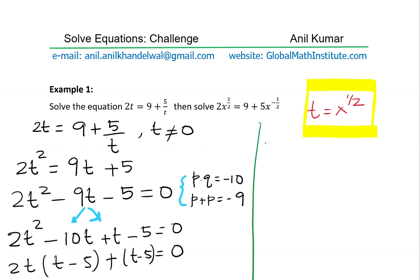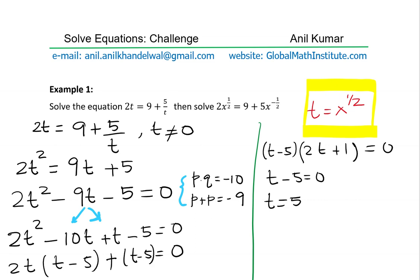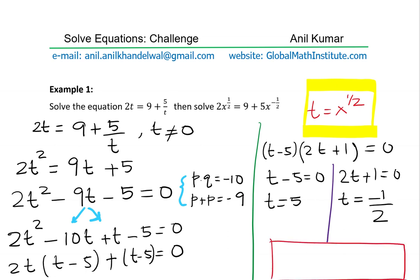Taking t − 5 as common and continuing the factoring process, we get (t − 5)(2t + 1) = 0. This gives two solutions: when t − 5 = 0, then t = 5; and when 2t + 1 = 0, then t = −1/2. So our two solutions are t = 5 and t = −1/2.